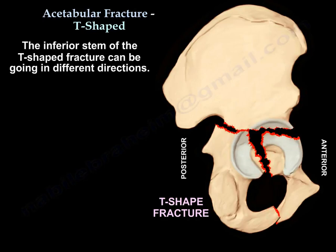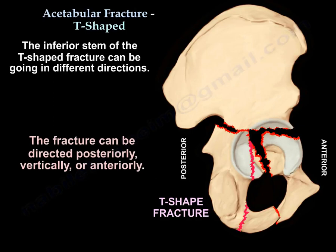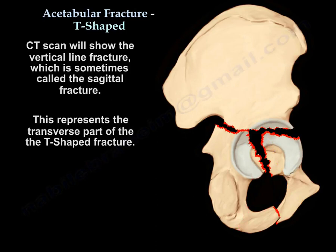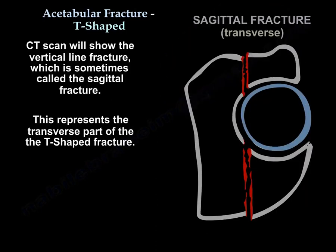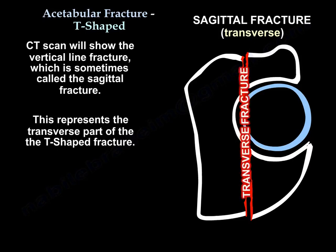The inferior stem of the T fracture can go in different directions — it can be directed posteriorly, vertically, or anteriorly. A CT scan will show the vertical line fracture, which is sometimes called a sagittal fracture, and this represents the transverse part of the T fracture.